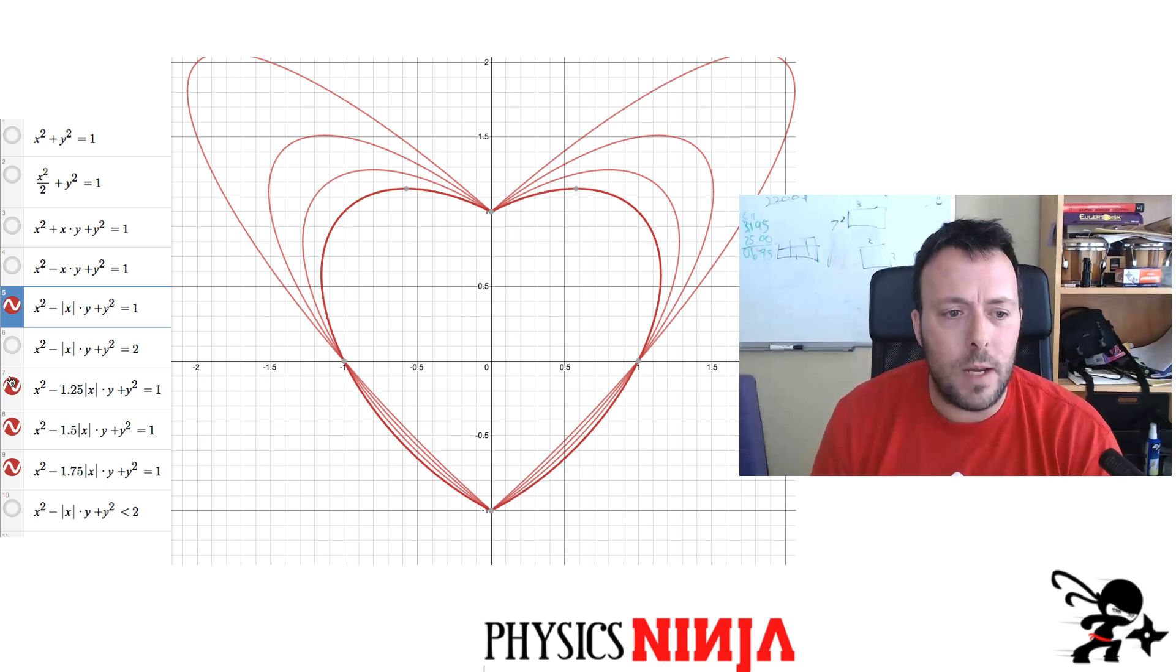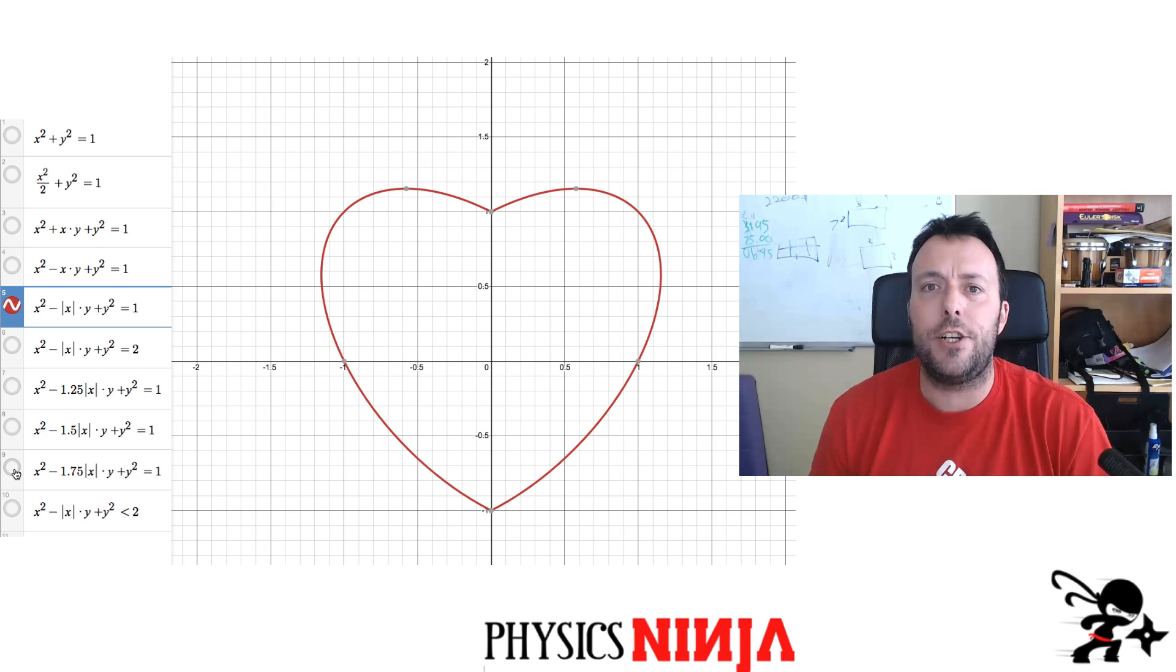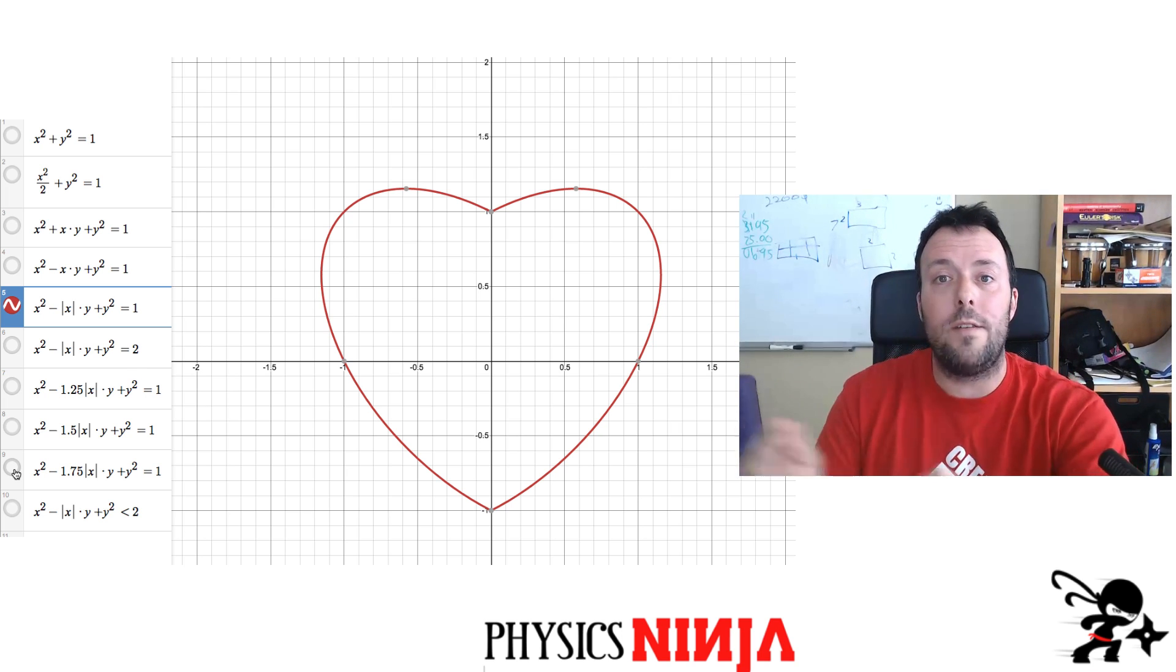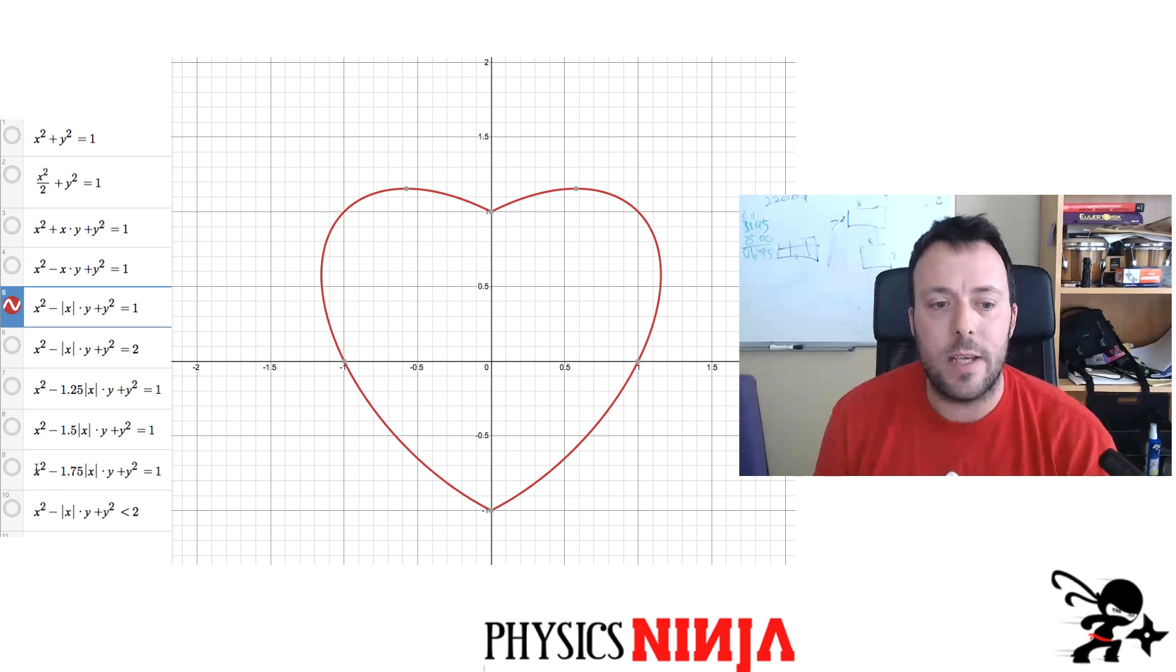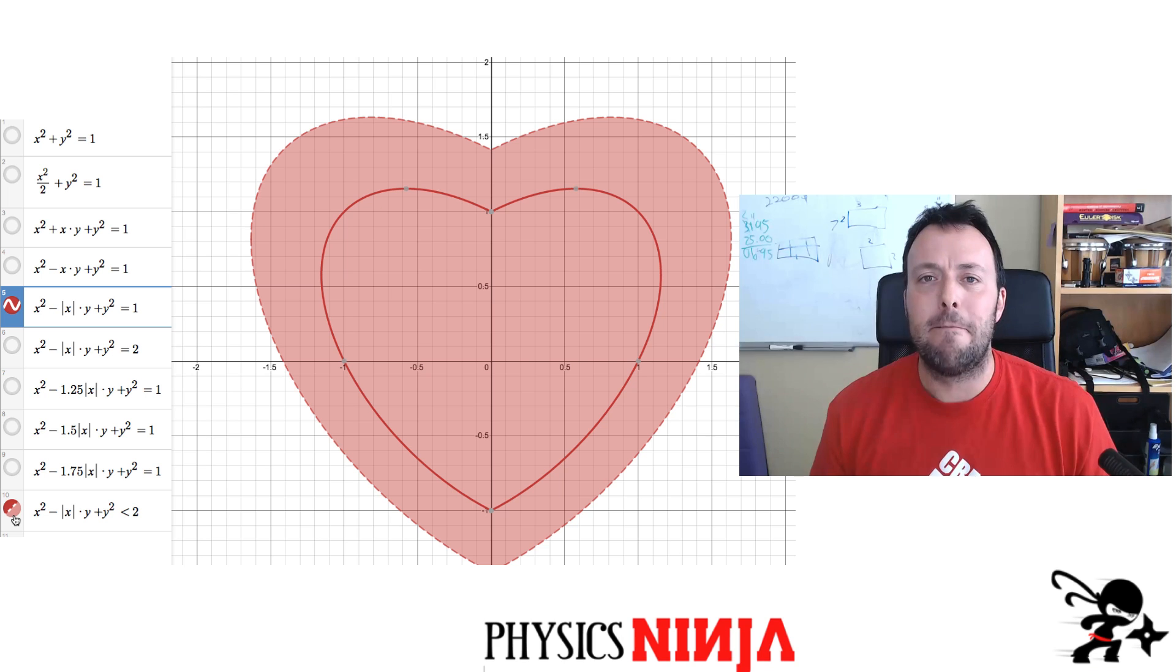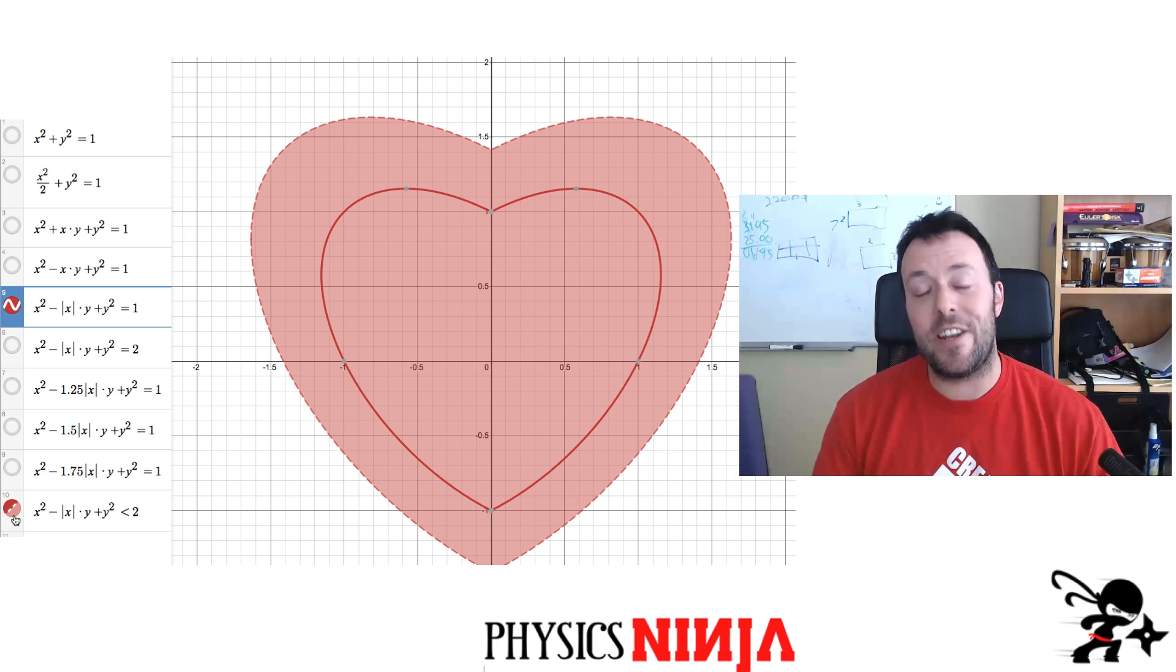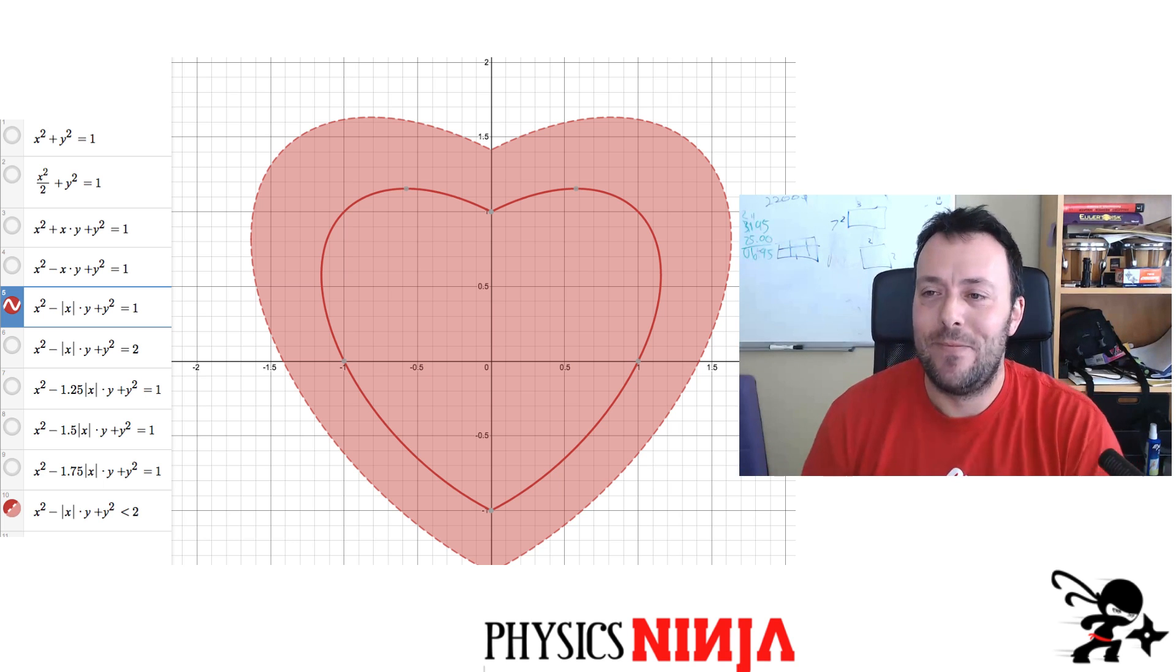One thing you might want to do now is you might want to color it in. The easiest way to color in any shape is instead of making the function equal to one value, you simply want to use an inequality. So I'm going to use the same function now, except I'm going to set it less than equal to 2. And there's the last one. I have just a beautiful heart. Anyway, hopefully you enjoyed this message, this video, and you've learned something about math. And hopefully you can use one of these messages tomorrow. Thanks for watching.